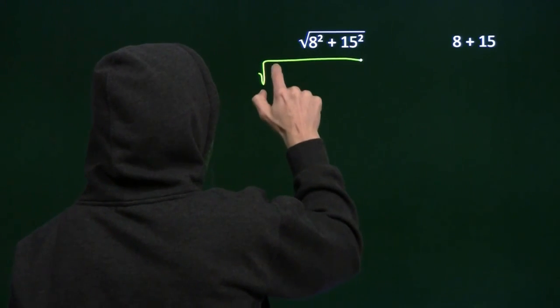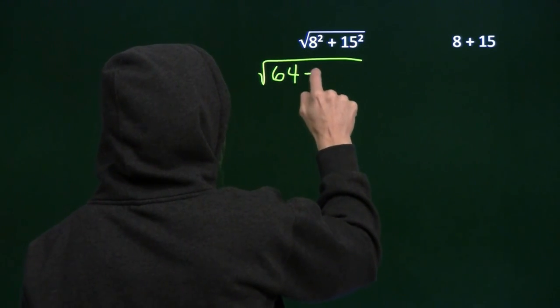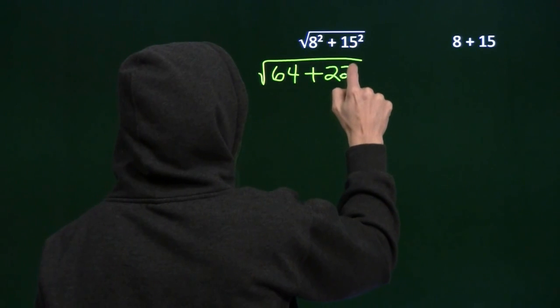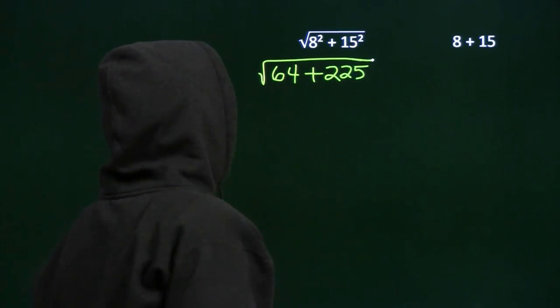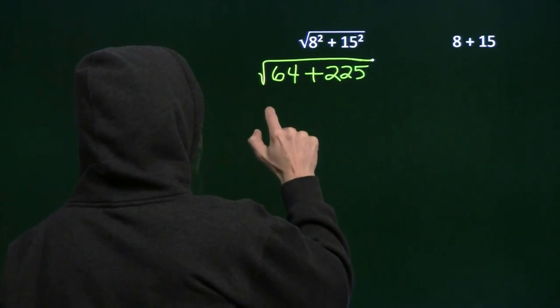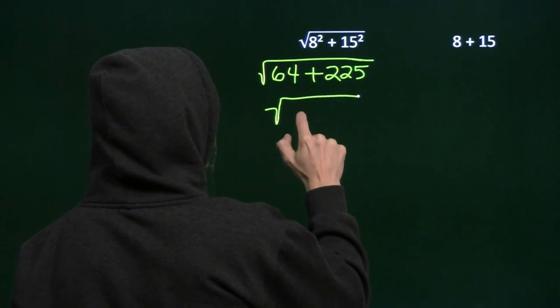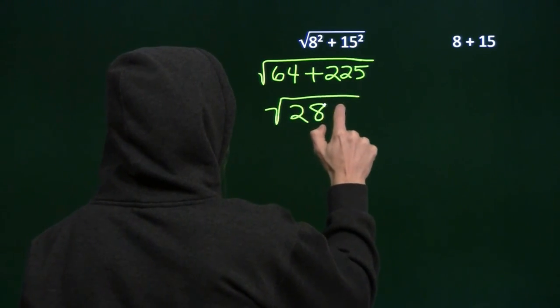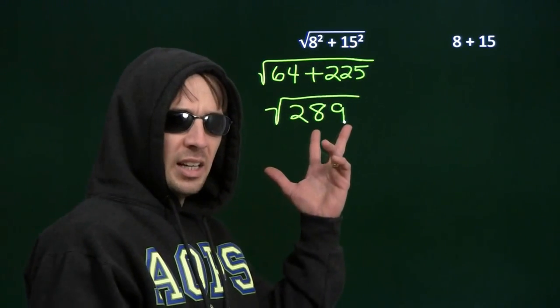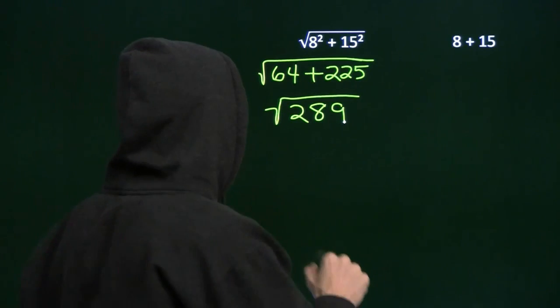We can compute both of these squares. We get 8 squared is 64. 15 squared is 225. And then we add those two up. We get 289. 64 plus 225 is 289. 289 is 17 squared. Square root of 17 squared.